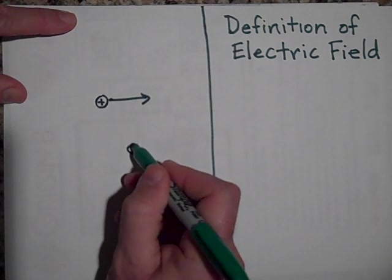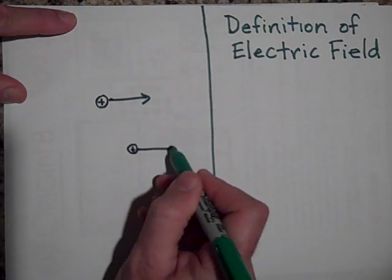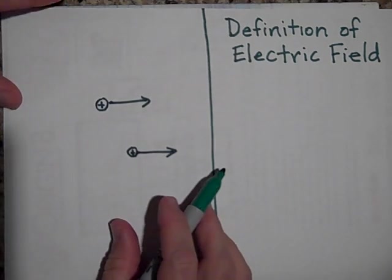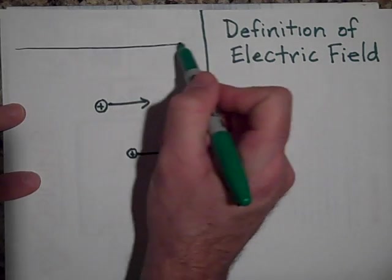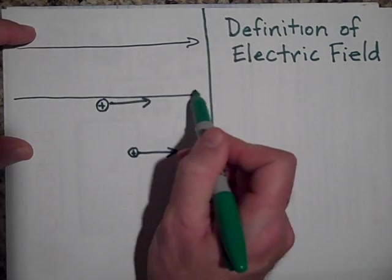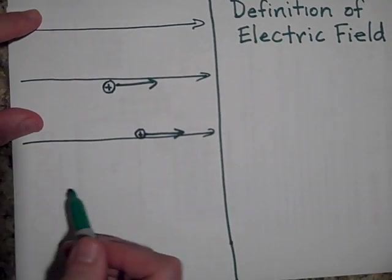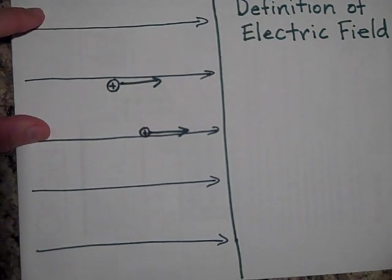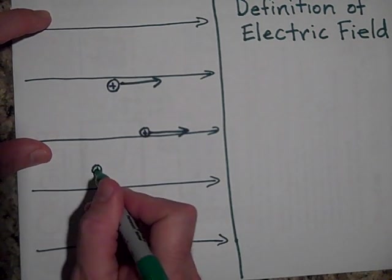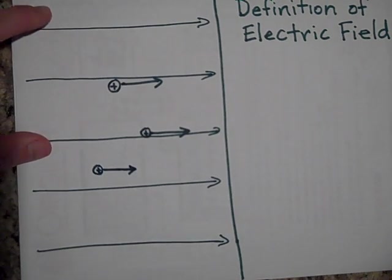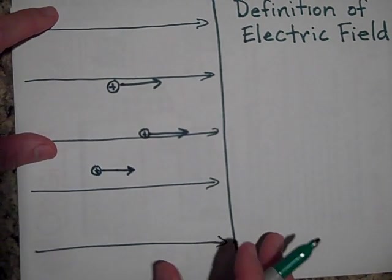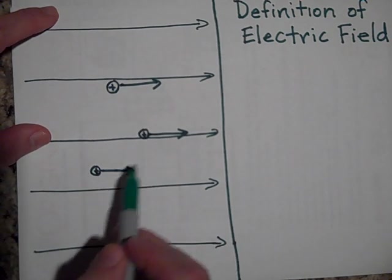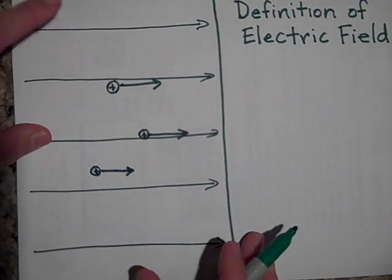If I put a positive test charge here, if it zips this way, then the field is indeed, again, to the right. Let's say that I drew some field lines. Field lines show you the direction a positive test charge will be pushed. And let's say that I drew them like this. Well, that's telling you that if you put a charge here, it's going to zip that way. Now, the electric field is a vector. So it has both a magnitude and a direction. Now, the direction is to the right. But how about the size of the electric field?